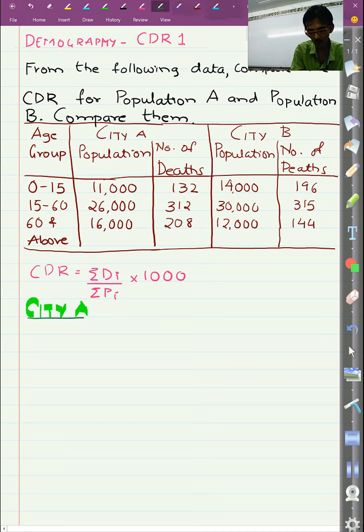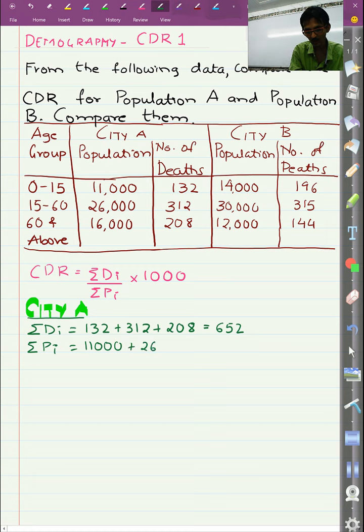For CDR, the total number of deaths, that is summation DI equal to 132 plus 312 plus 208. If we add them, we get 652. Summation PI equal to 11000 plus 26000 plus 16000 equal to 53000.